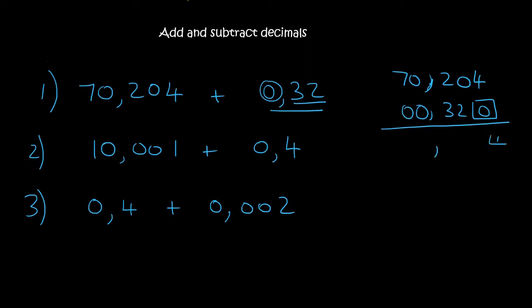So 4 plus 0 is 4. 0 plus 2 is 2. 2 plus 3 is 5. 0. And then 7. 70.524.